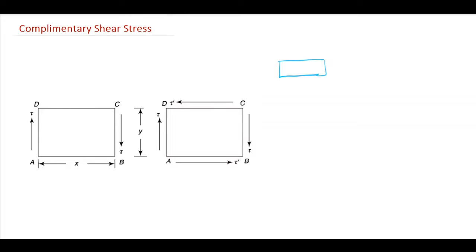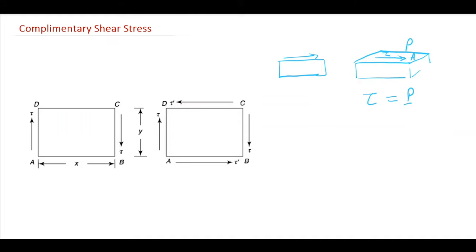Whenever we talk about shear stress, we always consider that there is a force acting tangentially to the surface. If this is the bar, that surface is the one on which the force acts tangentially. So if this is the force P and this is the area A, then tau, the shear stress, will be P divided by A.